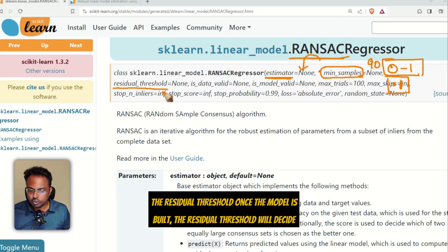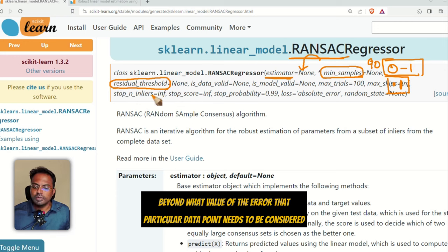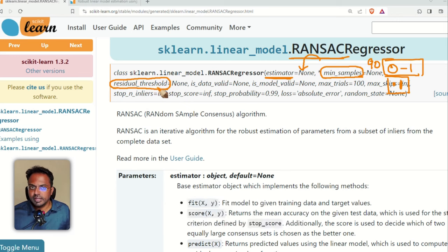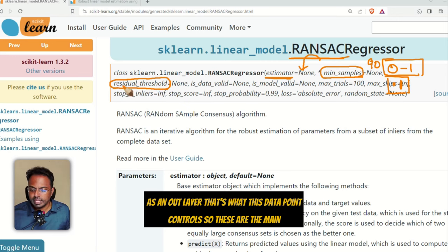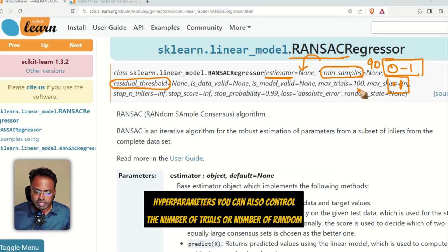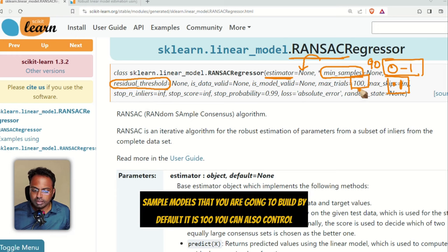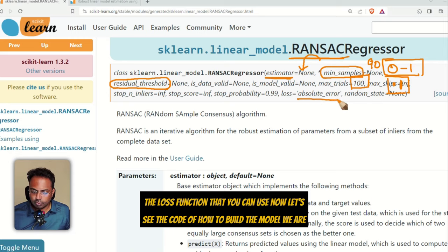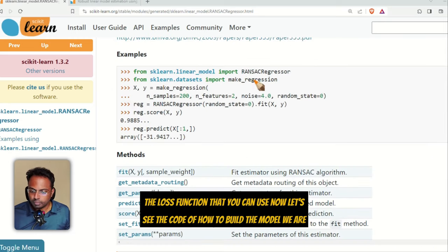We have the residual threshold. Once the model is built, the residual threshold will decide beyond what value of the error that particular data point needs to be considered as an outlier. That's what this data point controls. So these are the main hyperparameters. You can also control the number of trials or number of random sample models that you're going to build. By default, it is 100. You can also control the loss function that you can use. Now let's see the code of how to build the model.